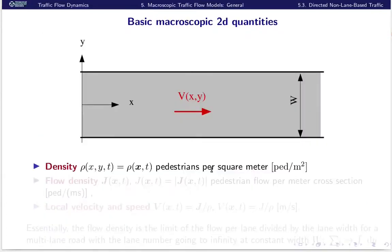Another example is the Vasaloppet in Sweden — the famous cross-country ski race. The speaker notes being a participant and photographing this during the race. If you are not an elite athlete, you are in a huge traffic jam and lose more than 30 minutes while the clock is ticking, because unlike other races, Vasaloppet does not have a wave-start regulation. So how to model this? We want to define the macroscopic 2D quantities before coming to the models later.